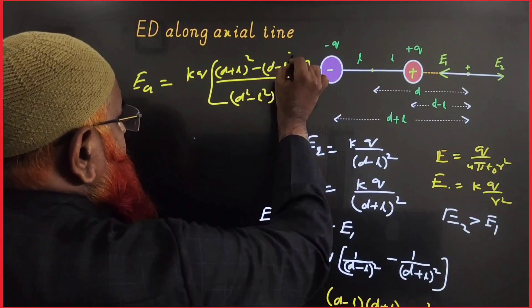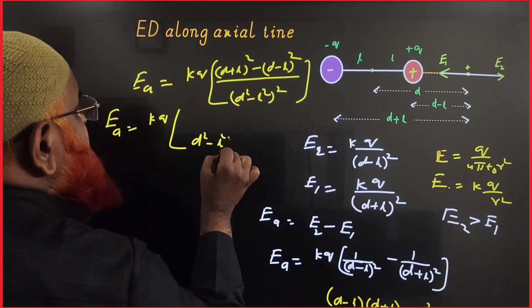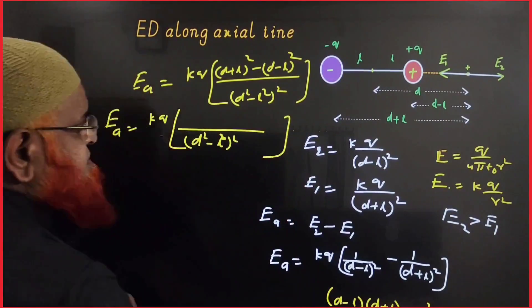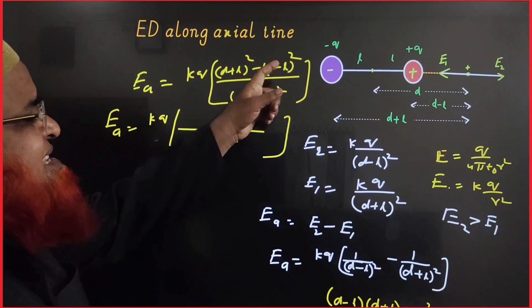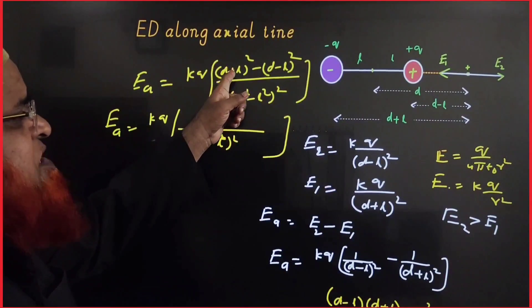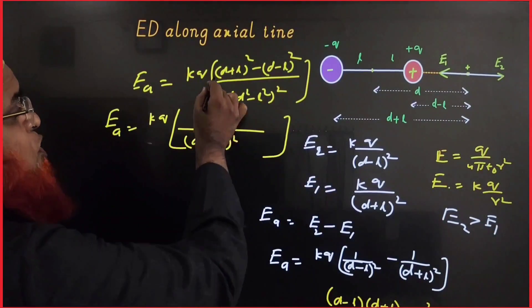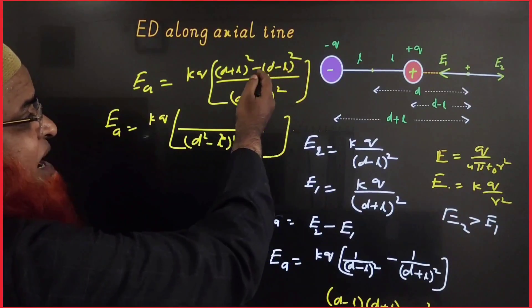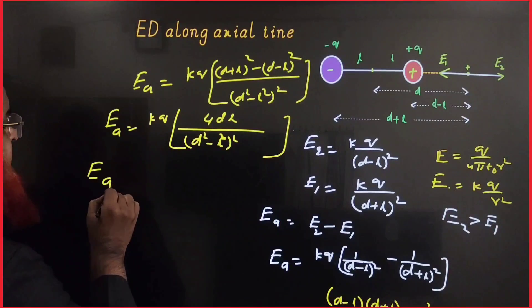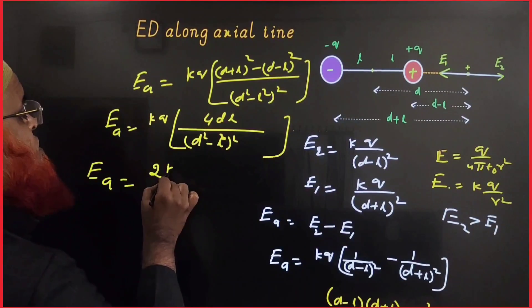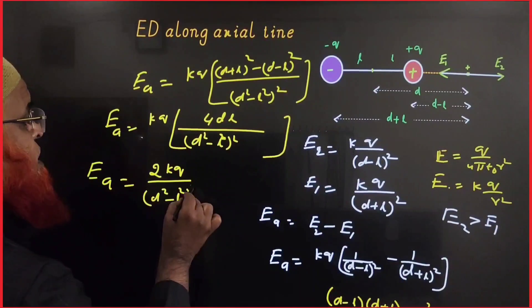In the numerator you have (D + L)² minus (D − L)². Expanding using A² + B² + 2AB and A² + B² − 2AB, the squared terms cancel, and what remains is 2DL plus 2DL, which totals 4DL. So E along the axial line equals KQ × 4DL divided by (D² − L²)².